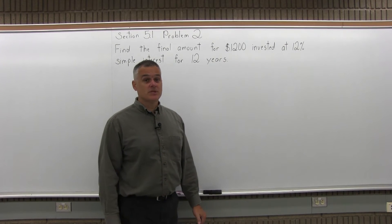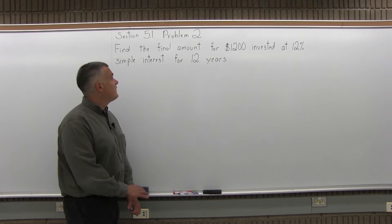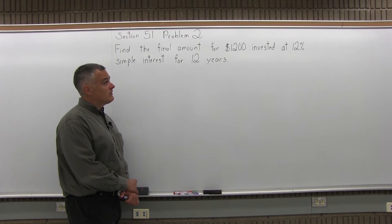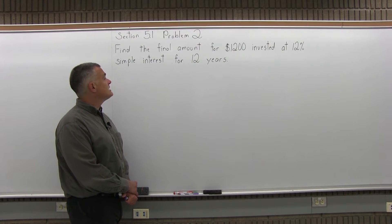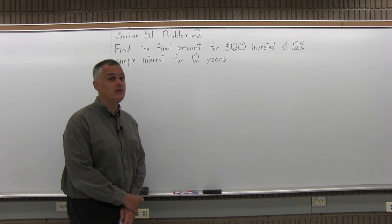This is problem number 2 from Section 5.1. It says find the final amount for $1,200 invested at 12% simple interest for 12 years.